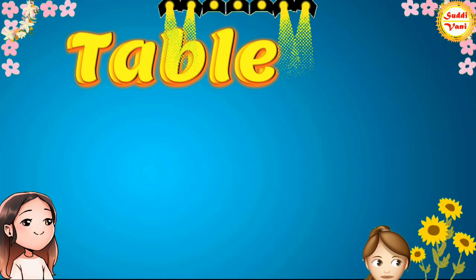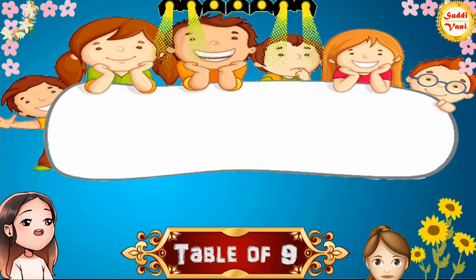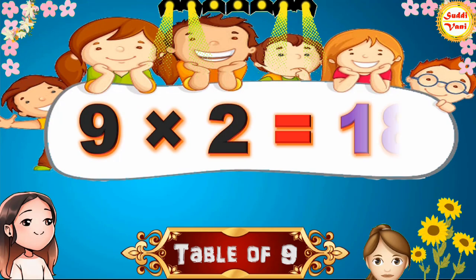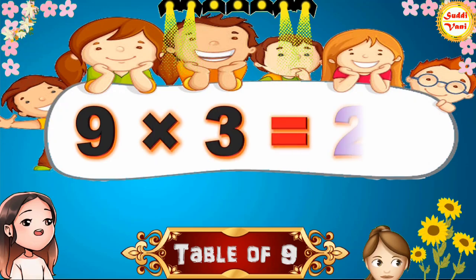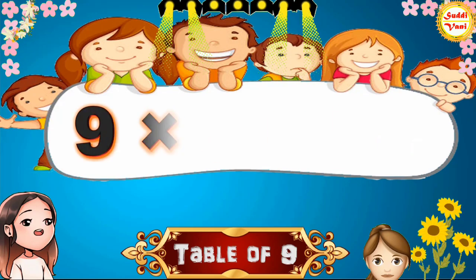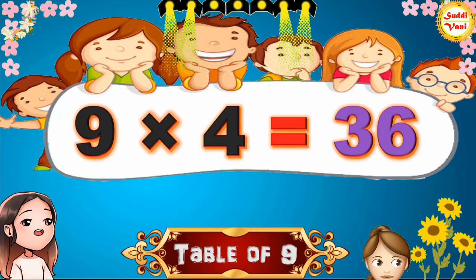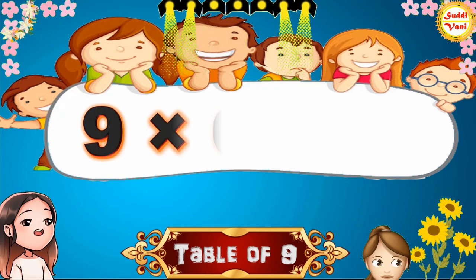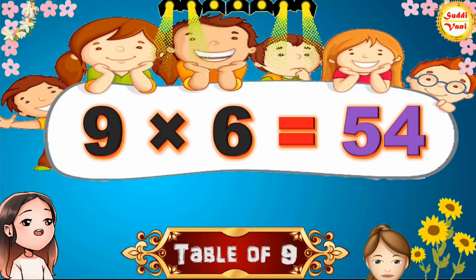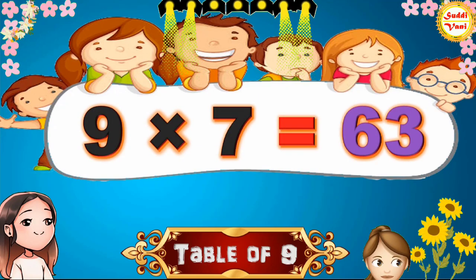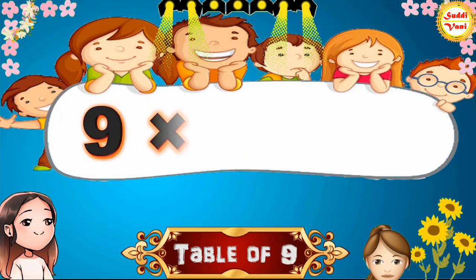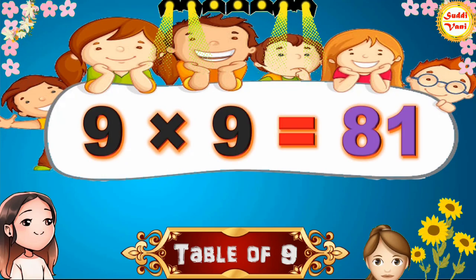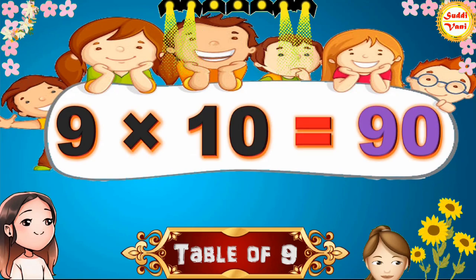Hello children, we will learn table of 9. 9×1=9, 9×2=18, 9×3=27, 9×4=36, 9×5=45, 9×6=54, 9×7=63, 9×8=72, 9×9=81, 9×10=90.